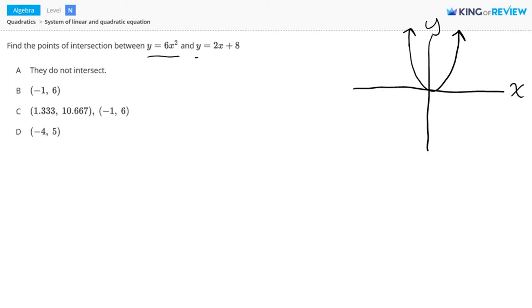And we have a line here, y equals 2x plus 8. So this could look something like this. So you can see in our picture, we have a parabola and we have a line. And they intersect at two points, right here and right here. So this question asks, what are the coordinates of these two points of intersection?